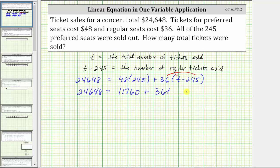Instead of writing plus negative 8,820, let's just write minus 8,820. And now we can still combine the constant terms on the right side. 11,760 minus 8,820 is equal to 2,940. This gives us the simplified equation 24,648 equals, let's write the variable term next, we have 36t, and then plus 2,940.